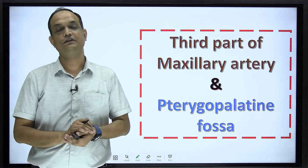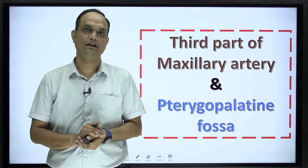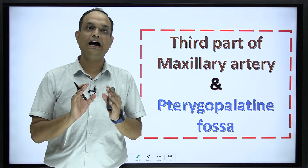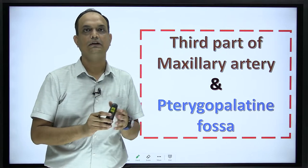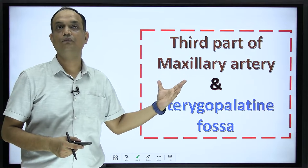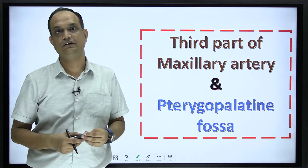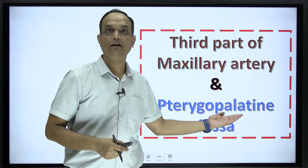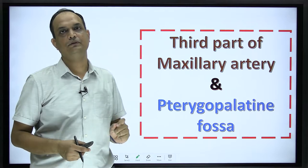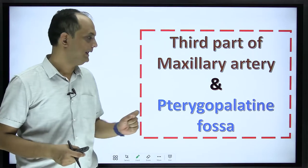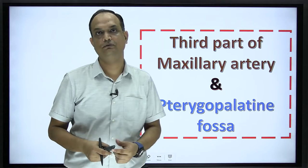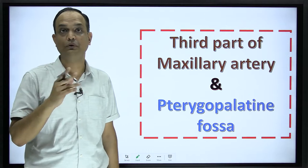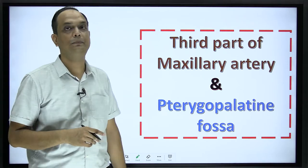In the continuation of the first and second part of the maxillary artery, today we will discuss the third part of maxillary artery. You have to first understand that the third part of maxillary artery is a very deep portion when you are doing the dissection in the infratemporal fossa. That third part enters into a very small fossa which is present between the facial bones behind the maxilla, and that is known as the pterygopalatine fossa. In this lecture we will not only see the branches of the third part but we will also have the orientation of the pterygopalatine fossa.